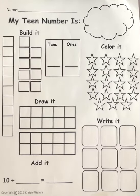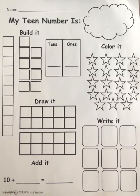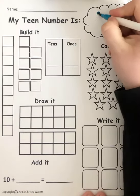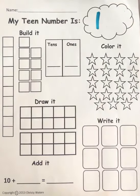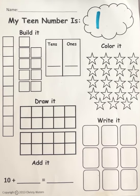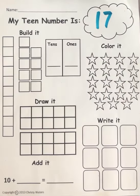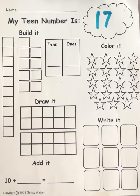Hi friends! Today's teen number is all about number 17. Teen numbers always always always have a 1 in the front, and then if I say 17, what number do you hear me say? You're right — a 7. So 17 is a 1 and a 7.